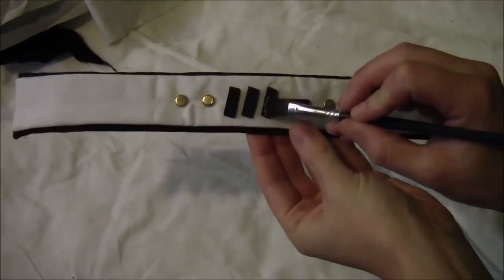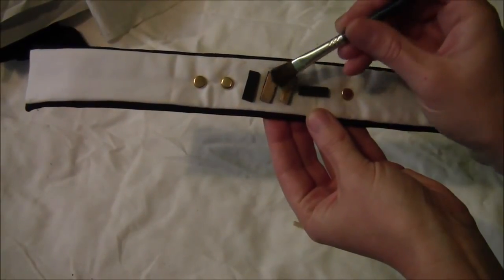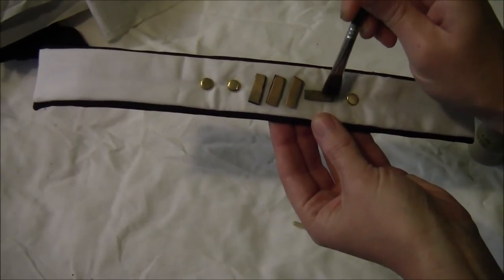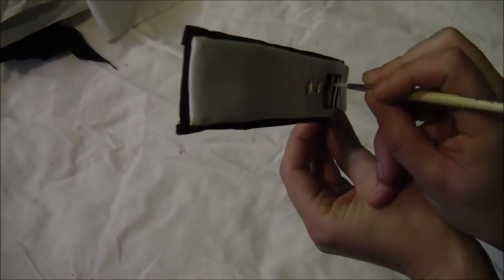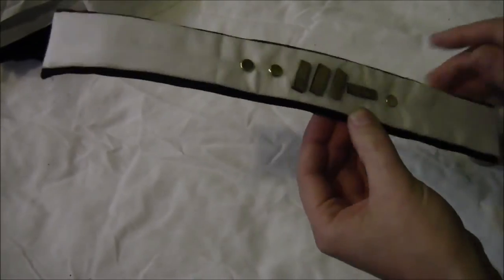Give the little pieces of foam a coating of metallic gold paint. You want to do both the tops and the sides of these all the way down to the white material. Just make sure not to get any gold paint on the white material. But cover them completely in the gold paint.